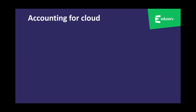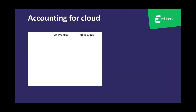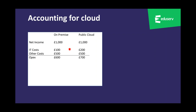Let's look at an example profit and loss account. A profit and loss account starts with income and then takes into account the expenditure items. Here, IT costs are one of the items of expenditure. In this example we see IT costs increase because in public cloud there's a shift from CapEx to OpEx. The other costs remain static, which gives you total OpEx — total operating expenses — increasing because the IT costs have increased.